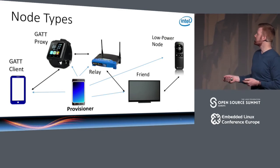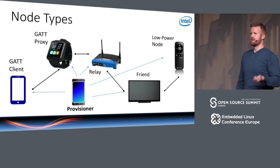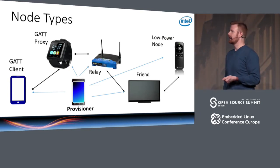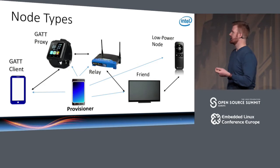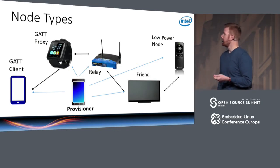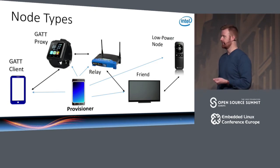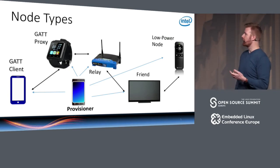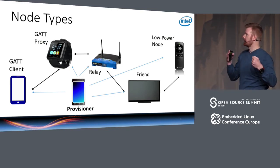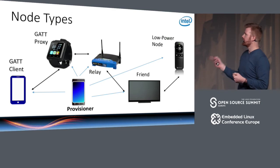GATT stands for Generic Attribute Profile, and it's the protocol that essentially all existing Bluetooth Low Energy devices use to communicate. The GATT client and GATT proxy features exist in Bluetooth Mesh to enable compatibility with existing legacy devices that cannot talk the Mesh advertising and scanning-based protocol natively — such as current mobile phone OSes. You would have, for example, an older phone acting as the GATT client, and a device called the GATT proxy responsible for bridging that one-to-one connection to the actual Mesh network.